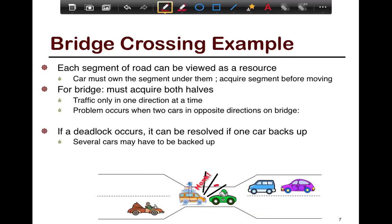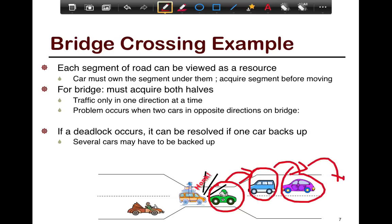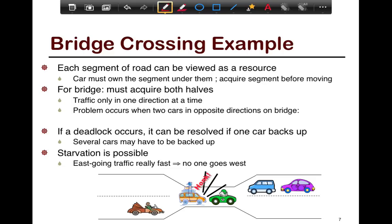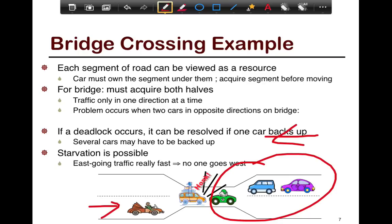There are subtle issues: when one car wants to back up, the car behind it also has to back off, creating a domino effect. You can think of similar situations in threads, where backing up one thread affects the one before it, and so on. It's not just a simple case of one thread backing off and releasing a resource — you may have to manipulate many of them for the system to work. Starvation is also possible: if east-going traffic is happening very fast, with more cars going in one direction, they keep acquiring the bridge and traffic only flows in that direction.